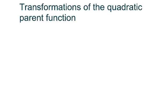Hi everyone. We're going to do a transformation of the quadratic parent function, and the one we're going to do is f of x equals 3 times the quantity of x minus 2 squared plus 1. And basically this is your vertical